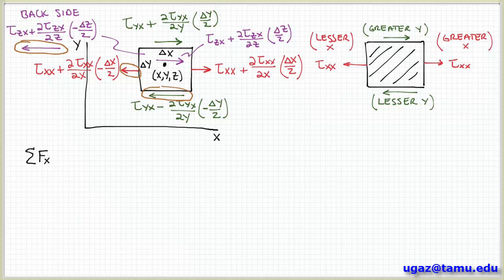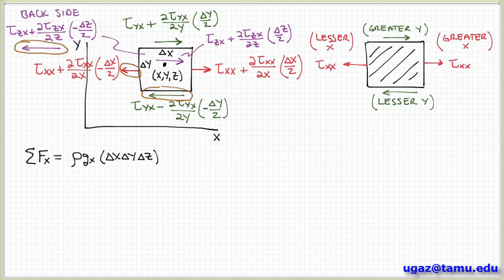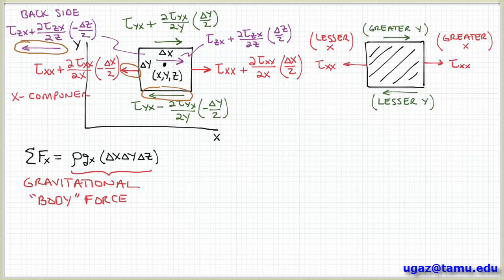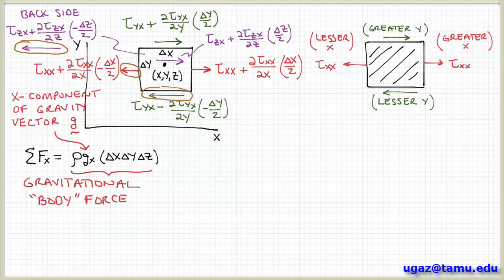The next question is how we can put this together to get an expression for the sum of the forces. Looking at forces in the x direction, the first term involves a body force due to gravity acting on the control volume. This gravitational term represents the force due to gravitational acceleration — a body force meaning it acts over the volume rather than over the surface. The g_x term is the x component of the gravity vector g, since the acceleration due to gravity is a vector quantity.